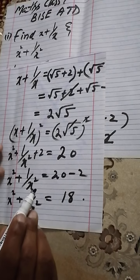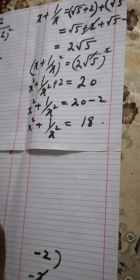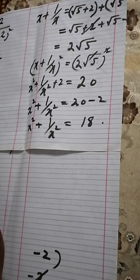Dear students, let us summarize our answers. We were asked to find x + 1/x and x² + 1/x². Our first answer is 2√5, and our second answer is 18. These are the final answers. I hope you have learnt this question in a better way. Do practice on all such sorts of questions. Till the next video, Allah Hafiz, take care.